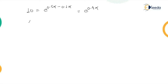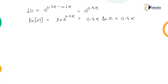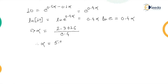Taking the natural log on both sides: ln(10) = 0.4α, since ln(e^(0.4α)) = 0.4α. Therefore alpha = ln(10) / 0.4 = 2.3026 / 0.4 = 5.75 per centimeter. This is the answer for alpha.